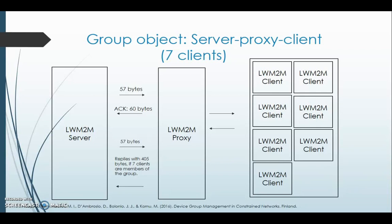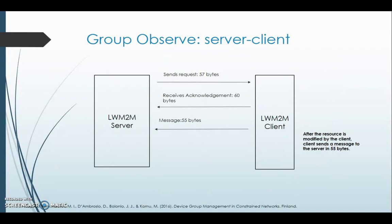We now consider the group observe scenario with one server and one client. The server sends a request to the client worth 57 bytes and the client sends an acknowledgement back worth 60 bytes. After the resource is modified by the client, the client sends a message to the server in 55 bytes. For two clients it is 55 times 2, which is 110 bytes, and for three clients it is 55 times 3, which is 165 bytes.